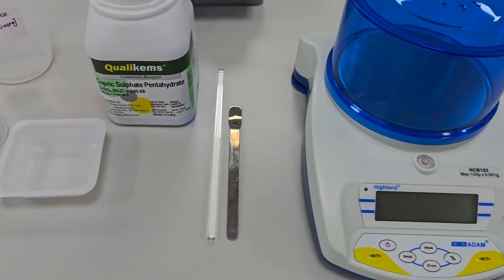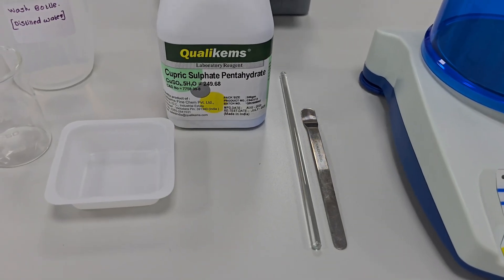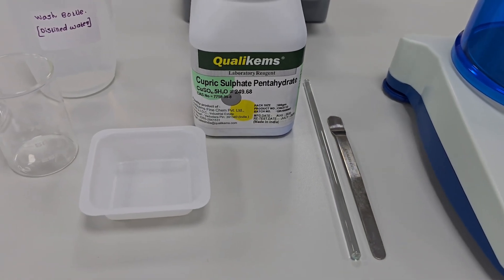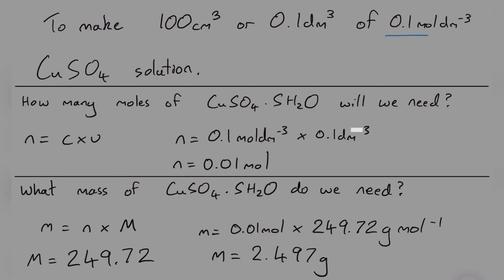First, let's calculate the number of moles of copper(II) sulfate we need. The concentration C is 0.1 moles per decimetre cubed and the volume V is 0.1 decimetres cubed. The number of moles is simply the concentration multiplied by the volume: 0.1 × 0.1 = 0.01 moles.